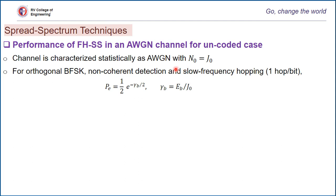As stated in an earlier lecture, the performance of a slow frequency hopping system is identical to that of a non-spread spectrum plain FSK modulation technique in an AWGN channel environment. Accordingly, the probability of error for an FSK signal is given as: Pe = ½ · e^(−γb/2), where γb indicates the signal-to-noise ratio and the noise here is the jamming signal.